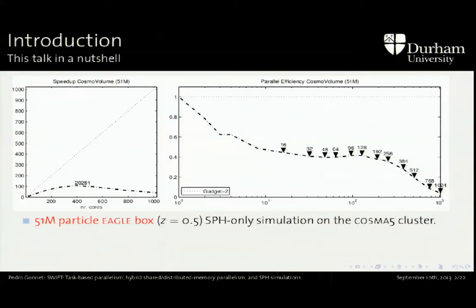We're taking the speed of the simulation on one single core and then just parallelizing it from there. What we can see is pretty depressing: at 16 cores — these nodes have 16 cores per box — so before even leaving a single node of the cluster, we're almost down to 40% parallel efficiency. Efficiency kind of hangs on there and then crashes out. At about 384 cores, we have maximum performance of about 20 seconds per time step of this simulation.